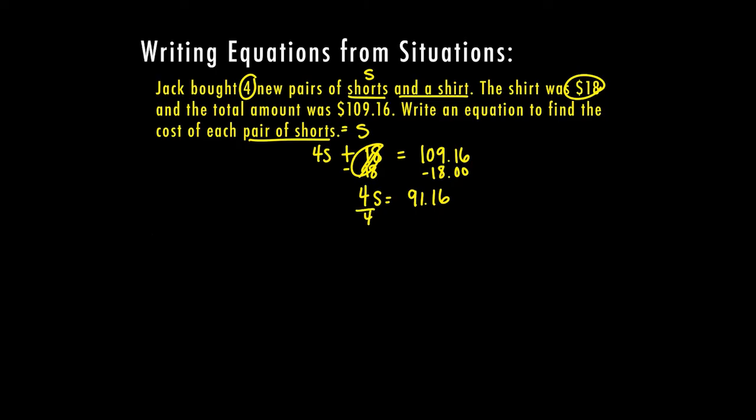then the last thing I need to do is divide that price into four pairs of shorts. So now s equals $22.79, so I can see the cost of each pair of shorts was